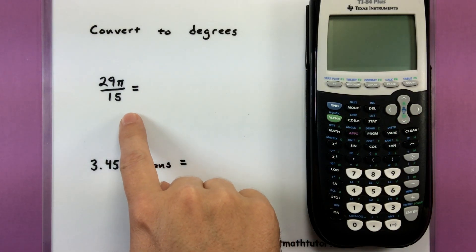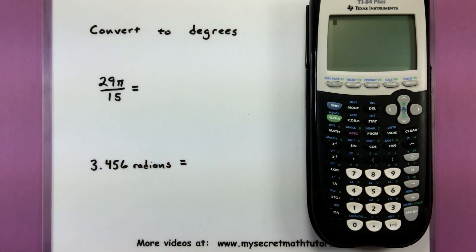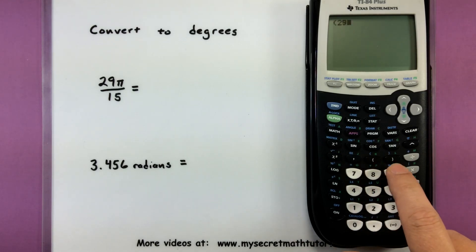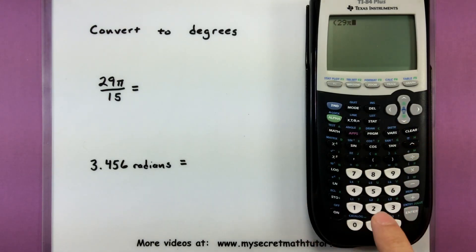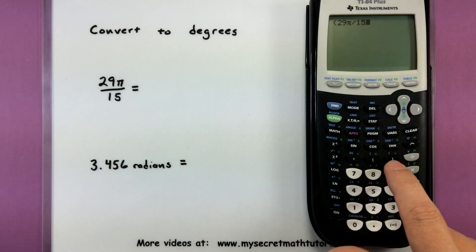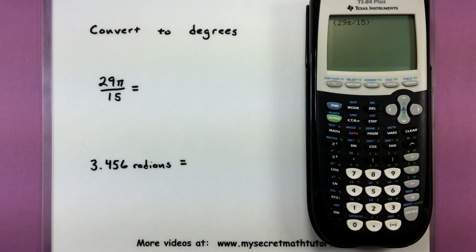Now what we're going to do is give it this measure. We're going to tell it that it's a radian measure and the calculator will automatically convert it into the proper degrees. So let's go ahead and type that in. So I have 29π divided by 15. And you'll notice I'm putting all of that inside of parentheses.